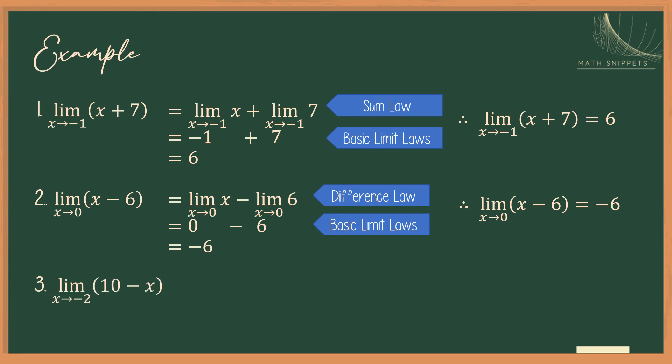How about if we have 10 minus x as x approaches negative 2? So again, we'll distribute the limit. So we'll have the limit of 10 minus the limit of x. So the limit of 10 as x approaches negative 2 is 10. The limit of x as x approaches negative 2 is negative 2. So 10 minus negative 2 is just 10 plus 2, which is equal to 12. Therefore, the limit of 10 minus x as x approaches negative 2 is 12.